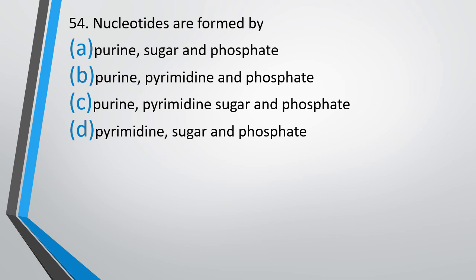Question 54. Nucleotides are formed by: purine, sugar and phosphate; purine, pyrimidine and phosphate; purine, pyrimidine, sugar and phosphate; or pyrimidine, sugar and phosphate? The correct answer is option C — nucleotides are formed by purine, pyrimidine, sugar and phosphate.